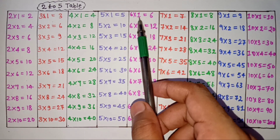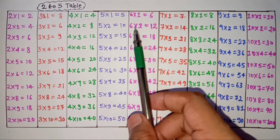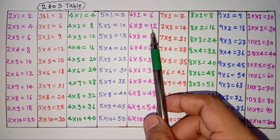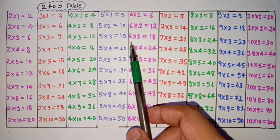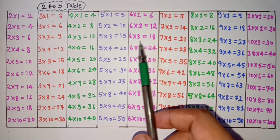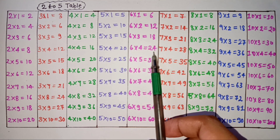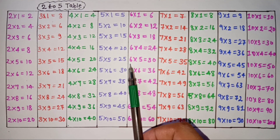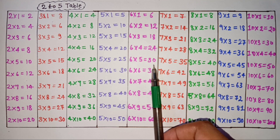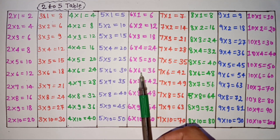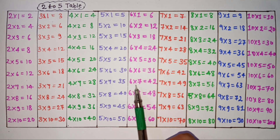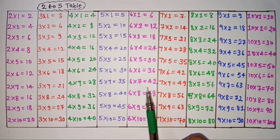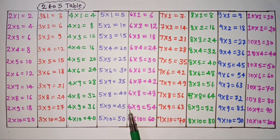Six ones are 6, six twos are 12, six threes are 18, six fours are 24, six fives are 30, six sixes are 36, six sevens are 42, six eights are 48, six nines are 54, six tens are 60.